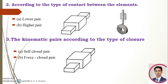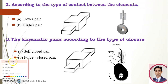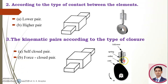Second is the force closed pair. When two elements of a pair are not connected mechanically but are kept in contact by the action of an external force, that is a force closed pair. An example is the cam and the follower — these two elements are in contact, but to keep them in contact we use a spring, which exerts a force on the follower to keep the two elements in contact. When force is applied to keep them in contact, we call it a force closed pair.